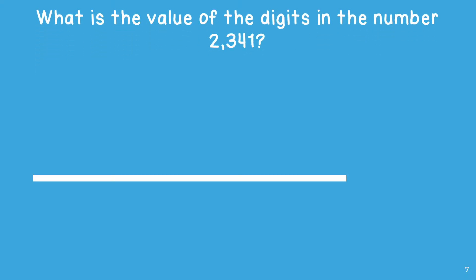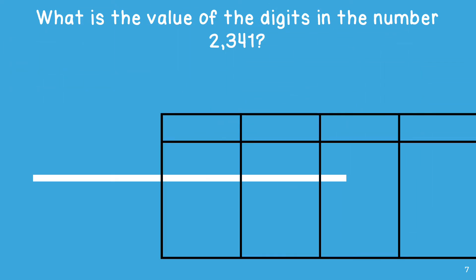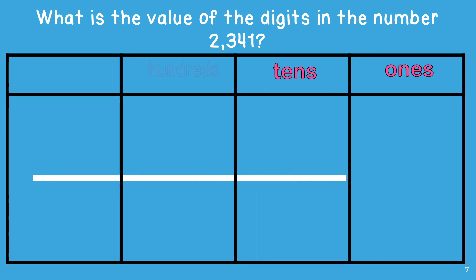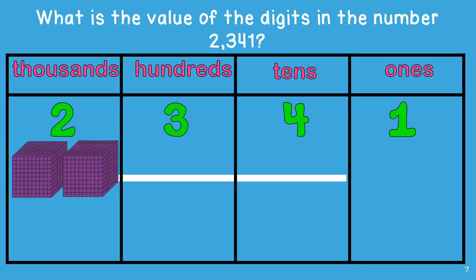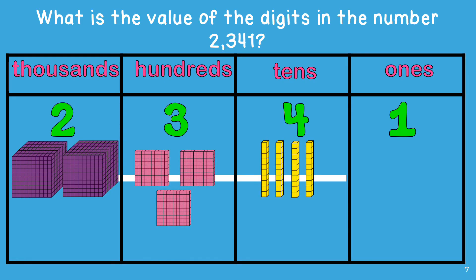Let's look at another example. What is the value of the digits in the number 2,341? First, we are going to place the digits inside a place value chart, starting from the lowest to the greatest value. Next, we will build the number using base 10 blocks: 2 one-thousand blocks, 3 one-hundred blocks, 4 tens, and 1 one. Then we will count the thousands blocks to determine the value of the 2: 1,000, 2,000. So the value of the 2 in the thousands place is 2,000.